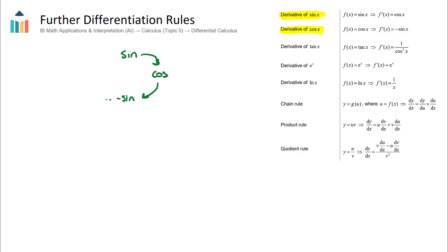The derivative of negative sine is in fact negative cos, because the derivative of sine was cos, so the derivative of negative sine will simply be negative cos. Then we close this circle: the derivative of negative cos will become positive sine. So the derivative of sine and cos functions will go back and forth in this loop.